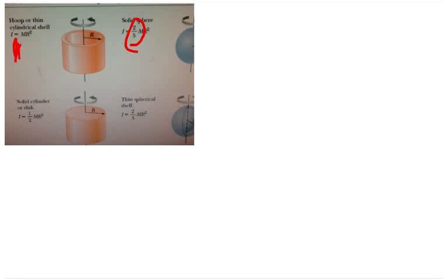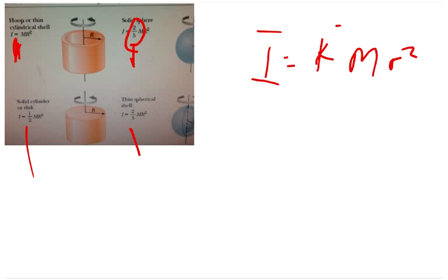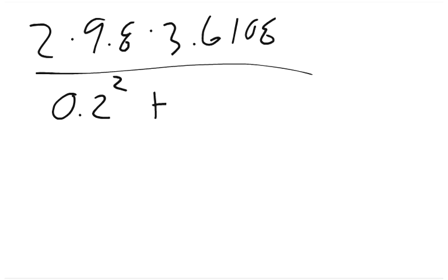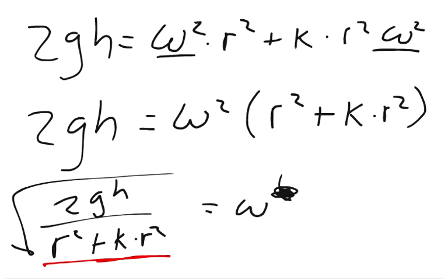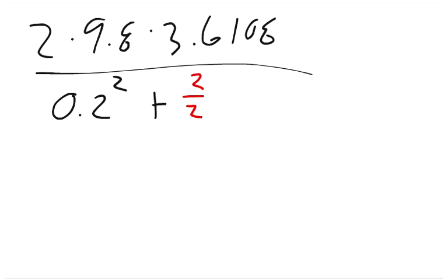k is a number I defined to make the algebra easier — it's the constant preceding mr squared in the moment of inertia formula, so I equals k times mr squared. For a thin ring k equals 1, for a solid sphere k equals 2/5, for a hollow sphere k equals 2/3, and for a disk k equals 1/2. Because we have a solid sphere here, k equals 2/5. So we plug in 2/5 times 0.2 squared in the denominator.